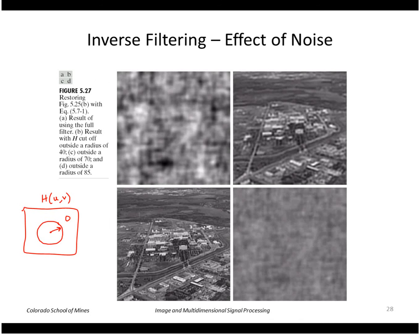Here is an example: we take the aerial image and undo the atmospheric blur. Without cutting off high frequencies, the filter is basically worthless. In this image we cut off values beyond a certain radius — at high frequencies we don't divide by H, we just leave the result as zero. Results are shown for radii of 40, 70, and 85. The result is quite sensitive to the exact radius chosen, as you can see going from one value to another.